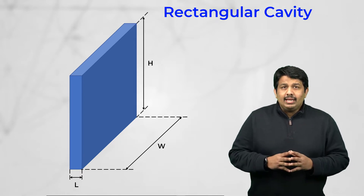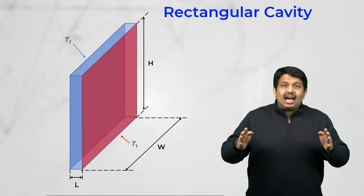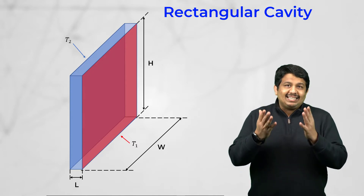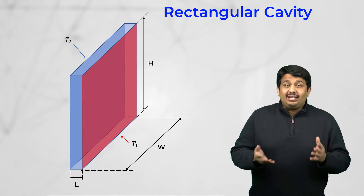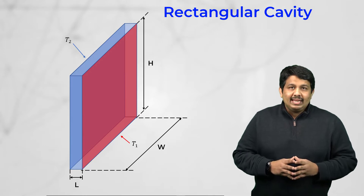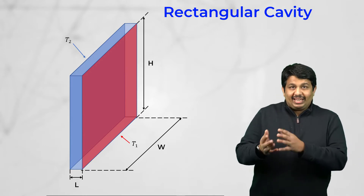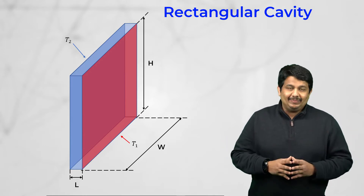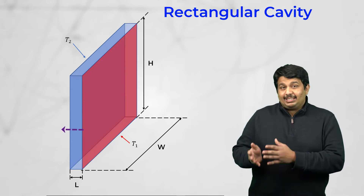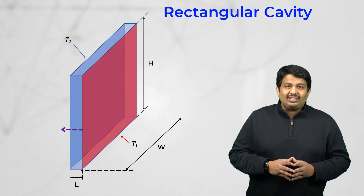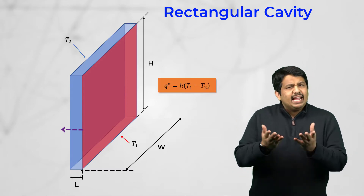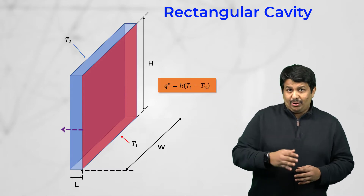In this cavity, the two opposite walls are at temperatures T1 and T2, such that T1 is greater than T2. The other four walls of the cavity are assumed adiabatic. This temperature difference is responsible for the natural convection, and the total heat flux transferred across the cavity is given by the following relationship.